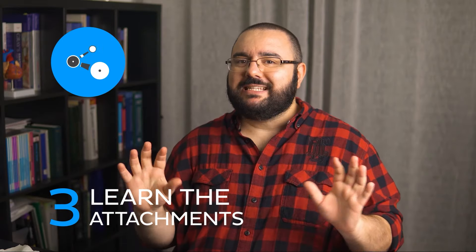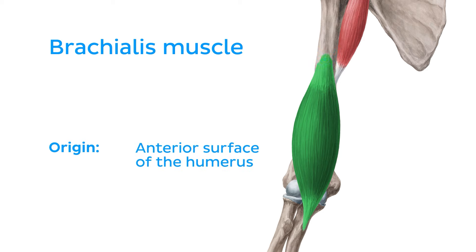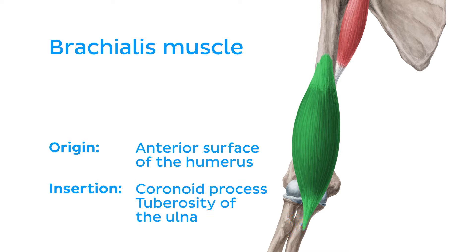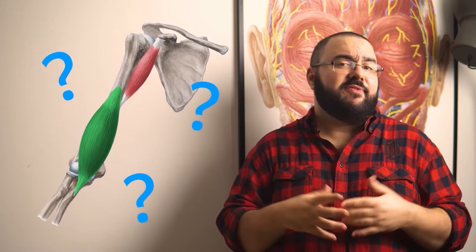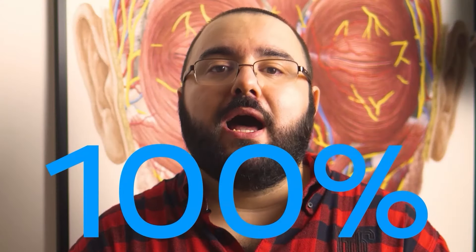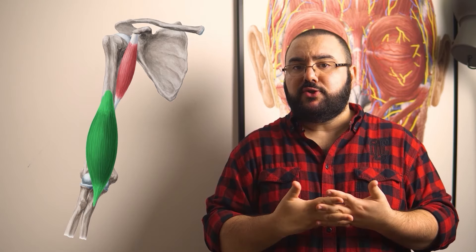Tip number three: learn the attachments of the muscle first. Identifying the origins and insertions of each muscle can give us more information than you think. For example, the brachialis muscle originates from the anterior surface of the humerus and extends over the elbow joint to insert onto the coronoid process and tuberosity of the ulna. Look at its attachment points and try to picture them on your own arm — what movement do you think this muscle would facilitate on contraction? Muscles help move joints, and we have a joint between the two attachment points, so the brachialis muscle would help in flexion of the forearm at the elbow joint. Sometimes knowing the attachment points of a muscle will give you all the clues you need to guess its function.